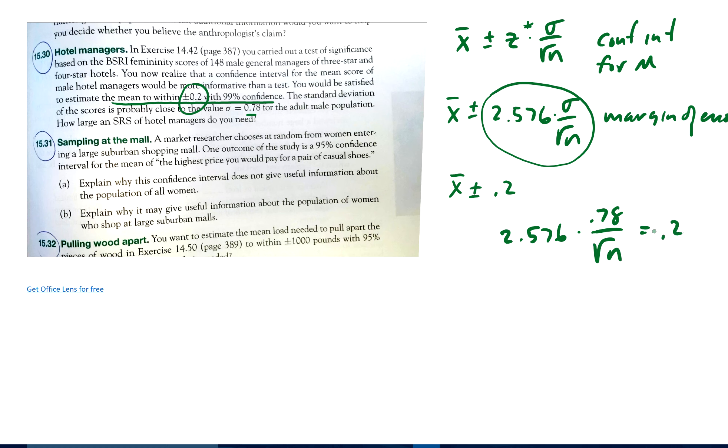We actually want it to be less than or equal to, but if I make it equal to, and then as long as N is larger than that value, it'll be smaller than 0.2, because the larger N is, since it's in the denominator, the smaller this number will be. Because if you divide by a bigger number, this number gets smaller.